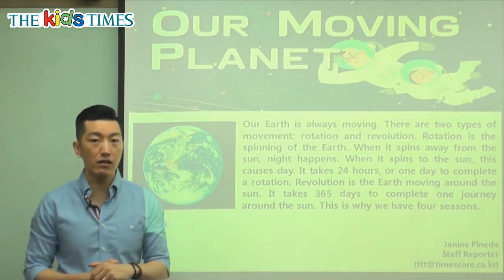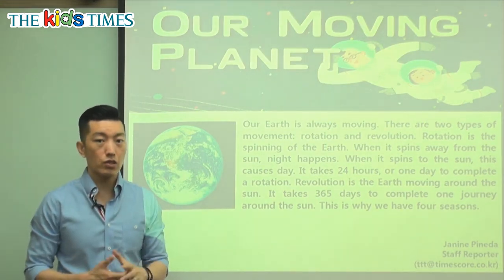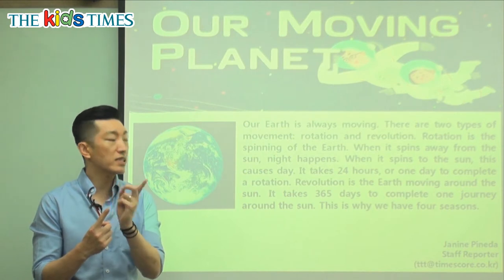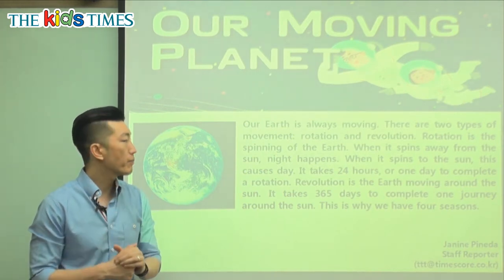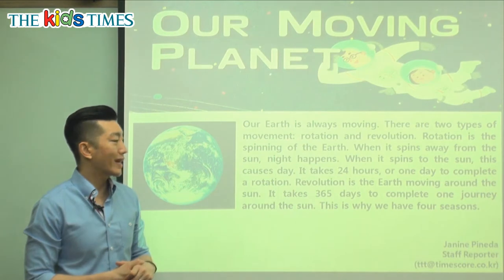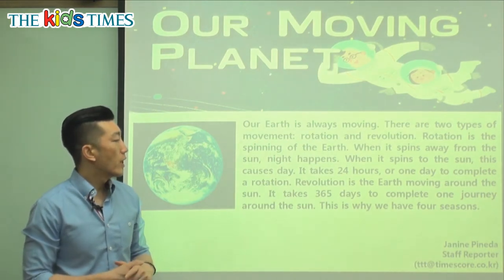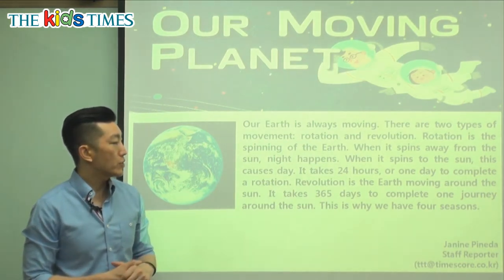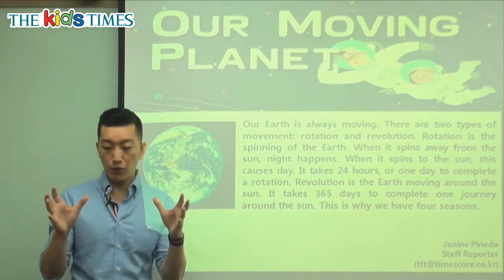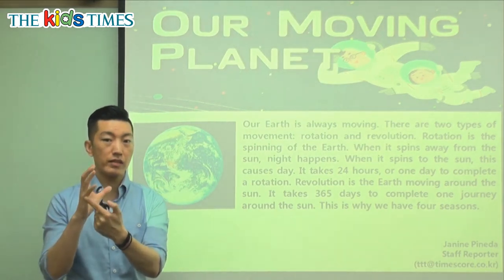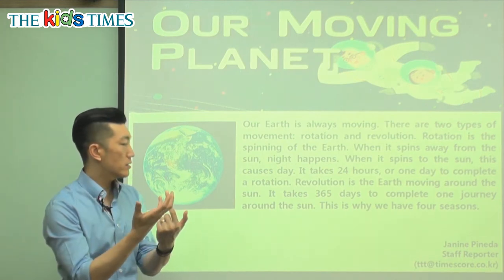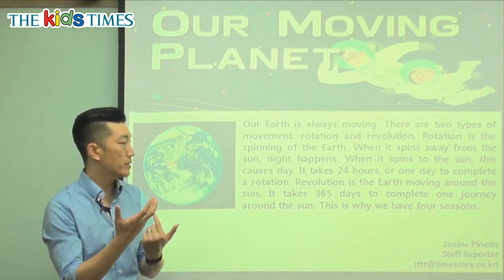Rotation is the spinning of the Earth. If I take a basketball and I spin it on my finger, the ball is in rotation — it's spinning. When it spins away from the Sun, night happens. And when it spins to the Sun, this causes day. So when Korea is on this side of the planet and it's spinning towards the Sun, that's when daytime happens.